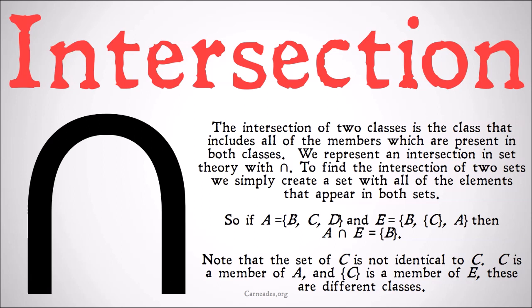This is assuming that all of these are separate classes, that none of them equal each other and none equal the null set. Note that the set {C} is not identical to C. That's why we have {C} in one list and C in the other, and they don't correspond. C is a member of A, and {C} is a member of E. These are different classes.